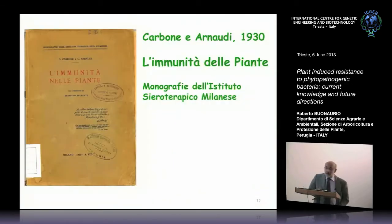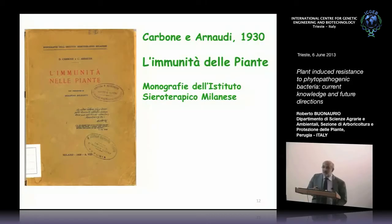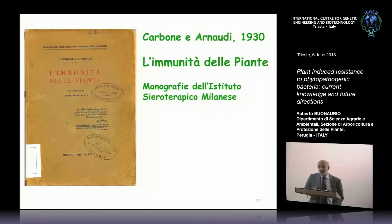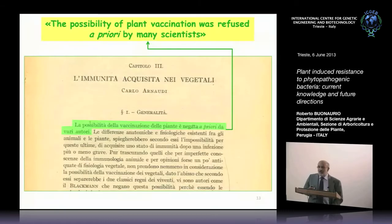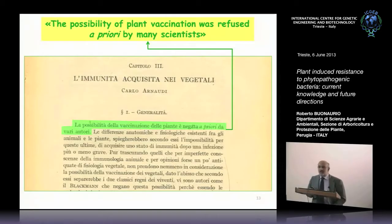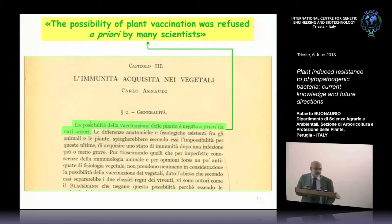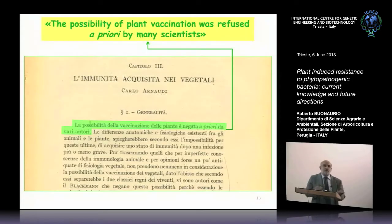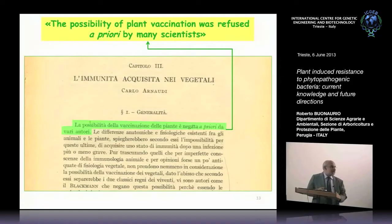In 1930, Carbone and Arnaudi, two Italian researchers, wrote a revolutionary book for that time: 'L'Immunità delle Piante' — The Immunity of Plants, published by Istituto Sieroterapico Milanese. Reading the third chapter, you find that the possibility of plant vaccination was refused a priori by many scientists. In 1930, immunity was considered reserved to animals, not to plants — so you can imagine the difficulty those authors had gaining acceptance from the scientific community.